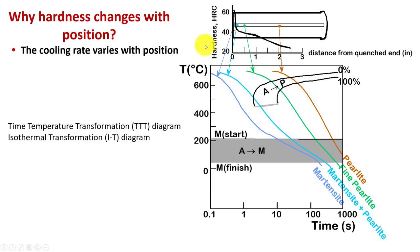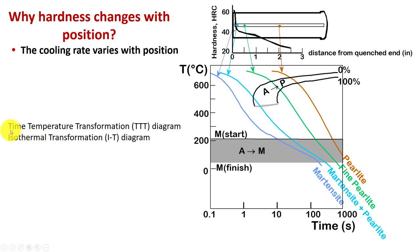We have a plot with the sample turned on its side where we're taking the measurements of hardness at the end as we go through. We're going to start developing something called an isothermal transformation diagram — an IT diagram. Sometimes we call it a time temperature transformation, a TTT diagram. You want to know both of these names for this diagram.